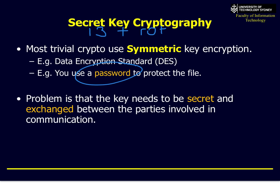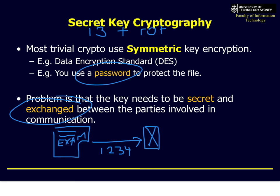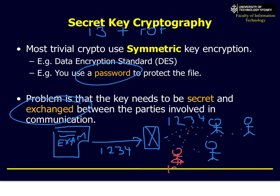The biggest issue with symmetric encryption is key exchange. For example: I have a document called 'exam', I encrypt it using password 1234, and I want to pass it to my three tutors. But when I say 'the password is 1234', somebody might overhear the actual password. If they ever get a copy of the exam — even though it's encrypted — they can now read it. The problem is that 1234 has been shared, and once it's out there, everybody could hypothetically know it. What do we do?